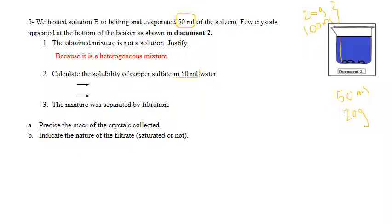Going back to the previous slide, in 100 milliliters it was 32 grams, but I don't want it in 100 milliliters, I want it in 50 milliliters. So I do cross multiplication. Let's start: in 100 milliliters the solubility is 32 grams.